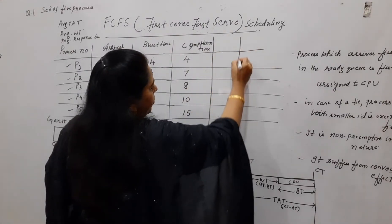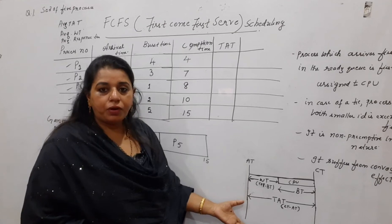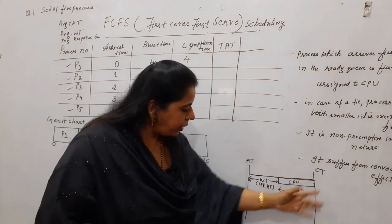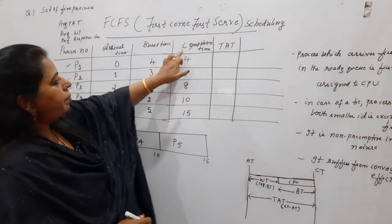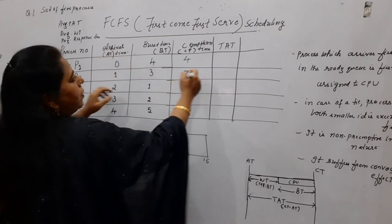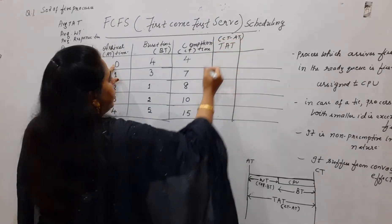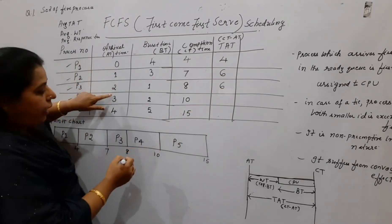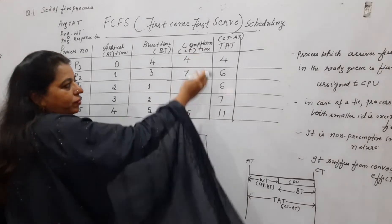Whatever is asked in the problem, they have asked to calculate the average turnaround time. Turnaround time equals completion time minus arrival time. So: P1 — 4 minus 0 equals 4; P2 — 7 minus 1 equals 6; P3 — 8 minus 2 equals 6; P4 — 10 minus 3 equals 7; P5 — 15 minus 4 equals 11.